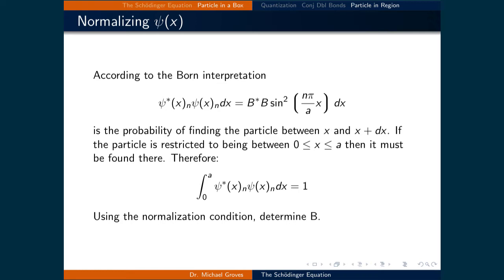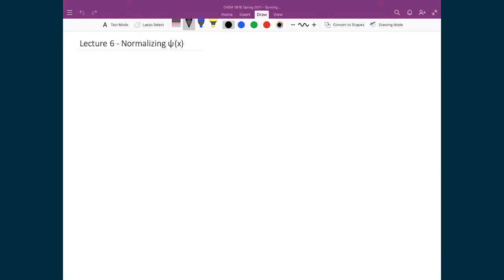By evaluating this integral, we can calculate b. We will invoke this relationship — where the probability of finding the particle somewhere is certain — several times in this course. This is called normalization, and b is typically called the normalization constant. So let's apply our normalization condition and solve for b, which is the constant in front of our wave function.